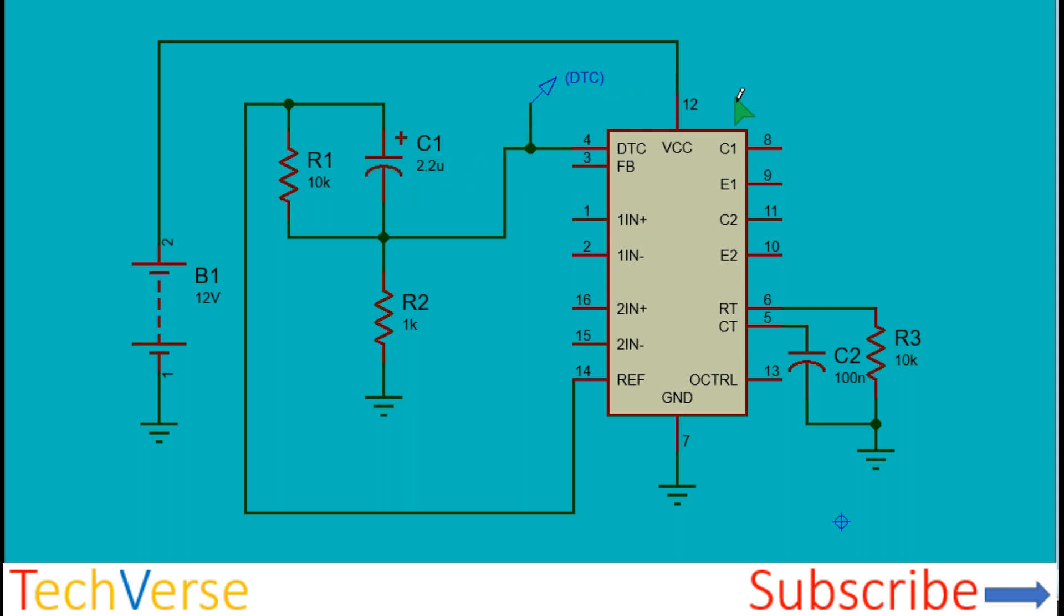The output PWM duty cycle will gradually increase from 0% to the maximum of about 97%. The resistor R2 discharges the capacitor when the IC is not powered on, ensuring the soft start kicks in again when the IC gets its power.